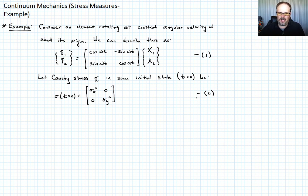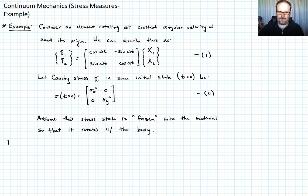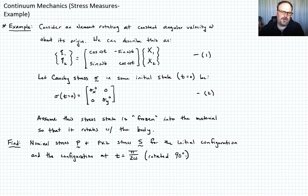We're going to assume that this stress state is frozen in space, so the element is just rotating in a rigid body manner. The stress state isn't going to change intrinsically — it's just going to spin according to equation one. What we want to find is the nominal stress P and the PK2 stress S for both the initial configuration at t equals zero and the configuration at t equals π over 2ω, which gives a 90-degree rotation.